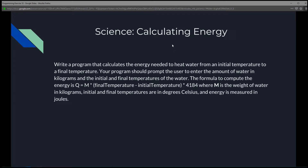We're going to write a program that calculates the energy needed to heat water from an initial temperature to a final temperature. Your program should prompt the user to enter the amount of water in kilograms, and the initial and final temperature of the water. The formula to compute the energy is Q equals M times the final temperature subtracted by the initial temperature, times 4184, where M is the weight of water in kilograms, and the temperatures are in degrees Celsius. The energy is measured in joules.